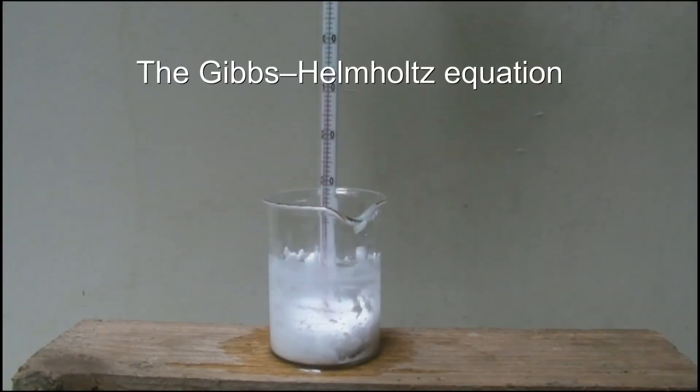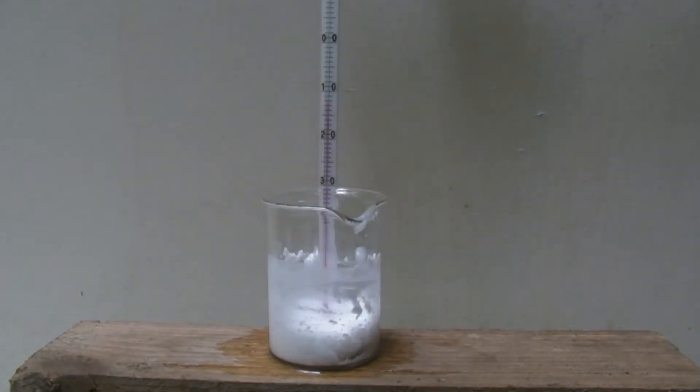The Gibbs-Helmholtz equation. When barium hydroxide and ammonium chloride are mixed, ammonia gas is formed. The mixture liquefies and the temperature decreases rapidly.